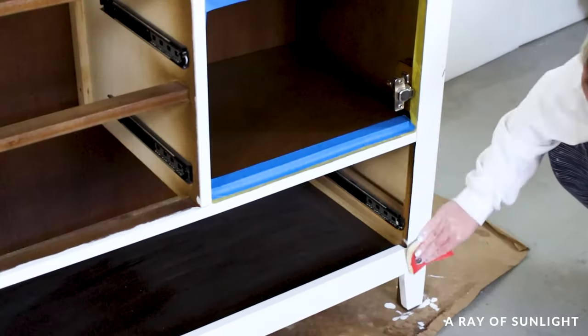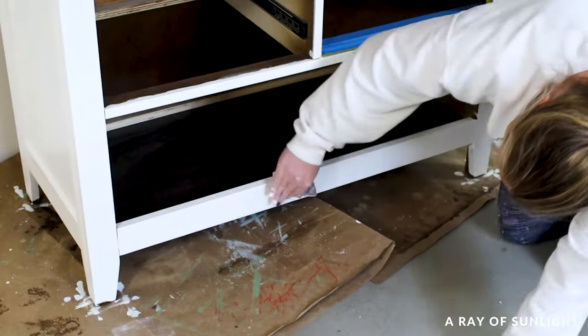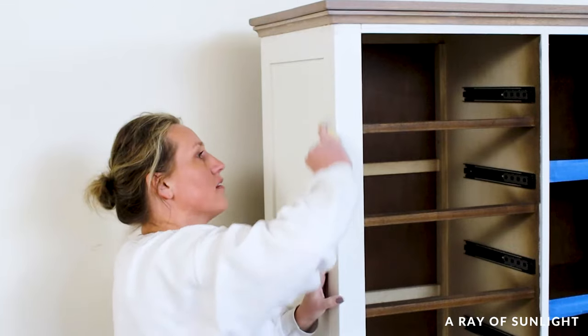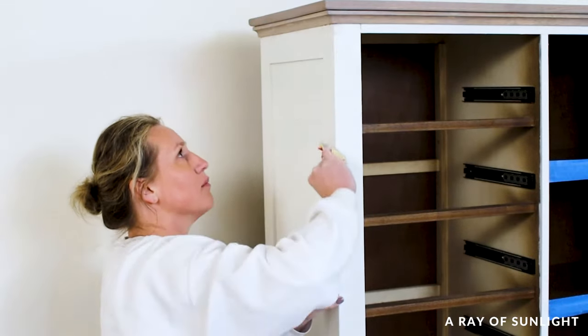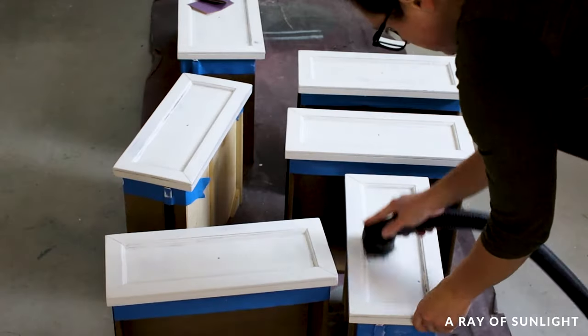When the primer was all dry, we sanded it smooth with fine grit foam pads just to remove the texture that was left behind and make it feel nice and smooth. We used the vacuum to suck up most of the dust and then wiped everything down with a tack cloth again.